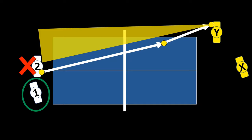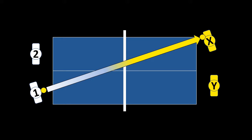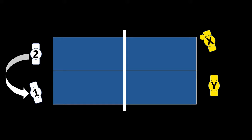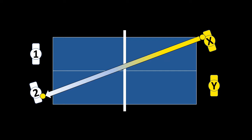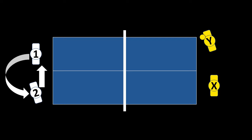Serve rotation in doubles: player one serves for two points, then gives the ball to opponent player X. Now player two comes to receive and player one moves aside. Player X serves two points, then gives to player two. Player Y comes to receive. Player two serves two points, gives to player Y — and player one comes to receive. This rotation continues throughout the match.